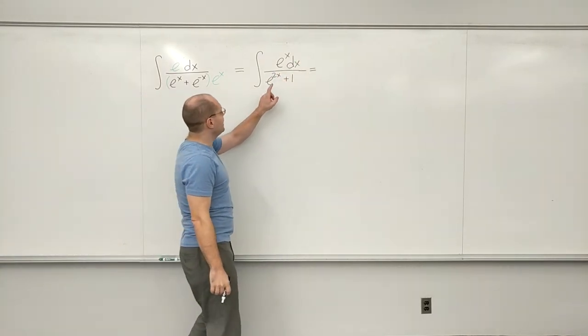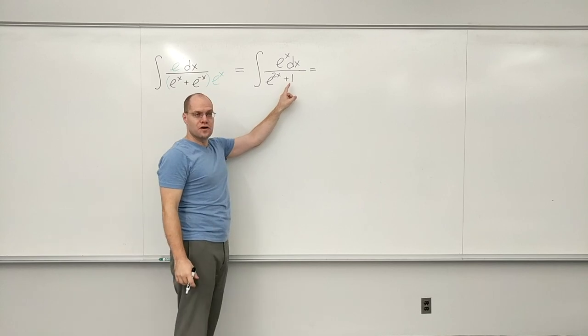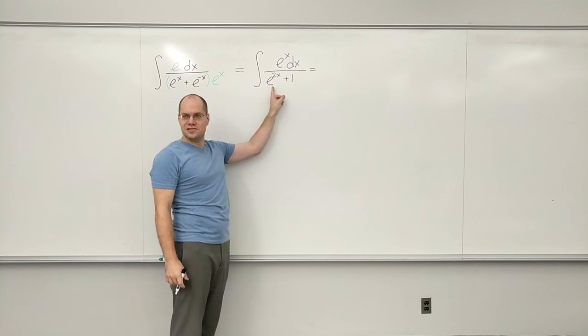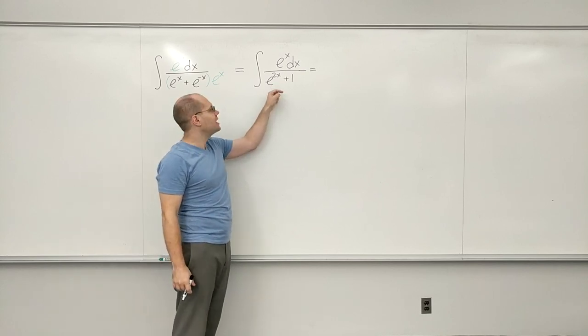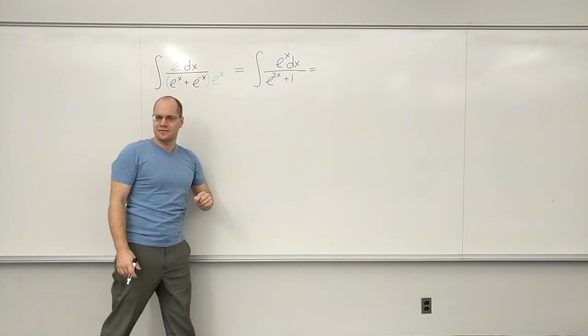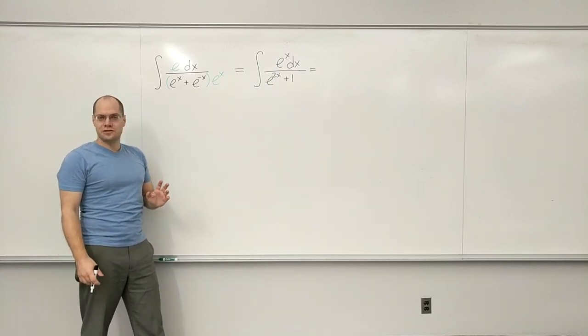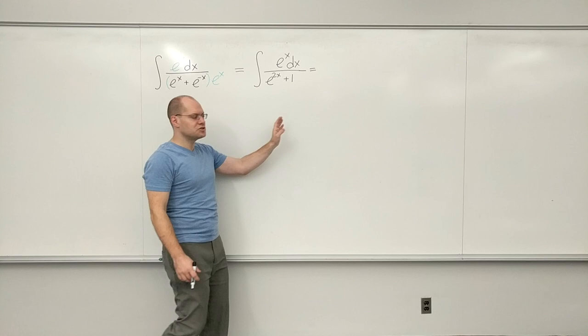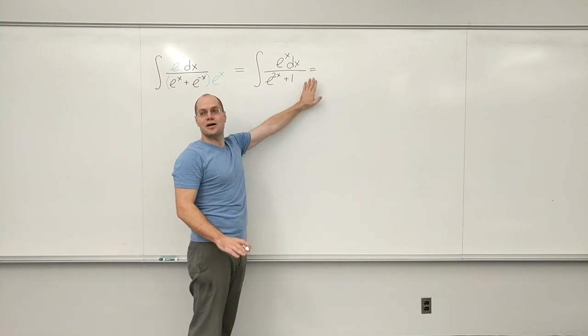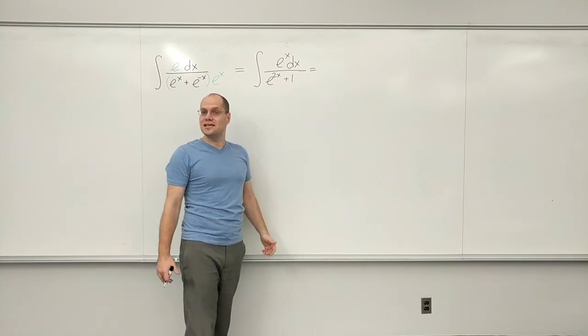And now, I see 1 over 1 plus the square of something times the derivative of that something. And I'm golden. In fact, this is one of the integrals that we should just stop right here and write down the answer, because we see it.